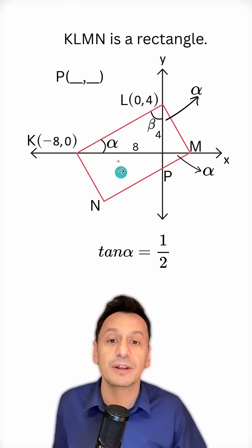What does tangent alpha mean? It's the ratio of what you see opposite alpha to its adjacent side. In other words, the side opposite alpha will be half the length of the side adjacent to it.